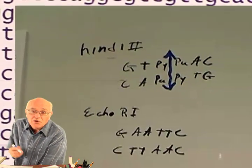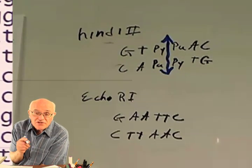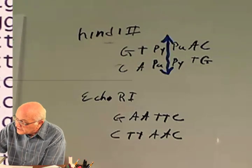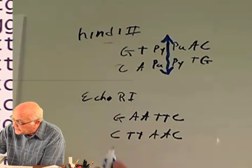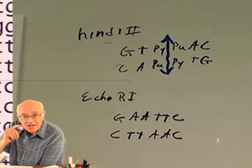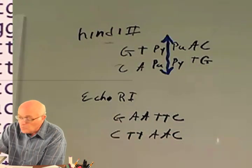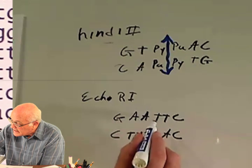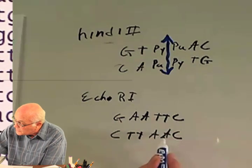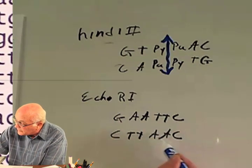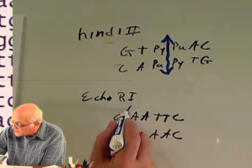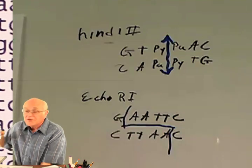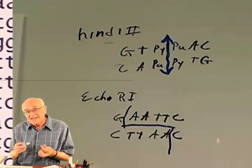Another tool used by molecular biologists which comes from bacteria involves something called a sticky end. The enzyme EcoRI makes a break at a location that is G-A-A-T-T-C, and notice it reads the same from one direction going the other direction. It makes a staggered end — a sticky end.